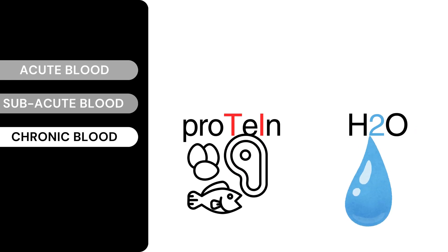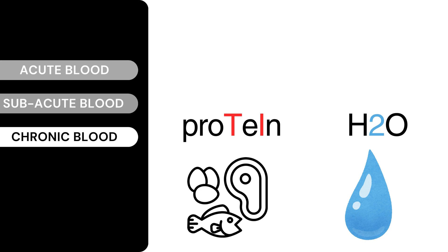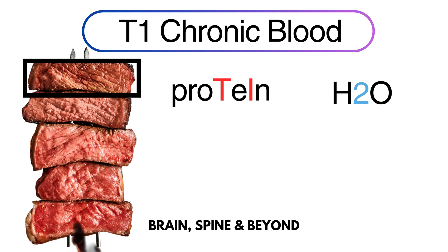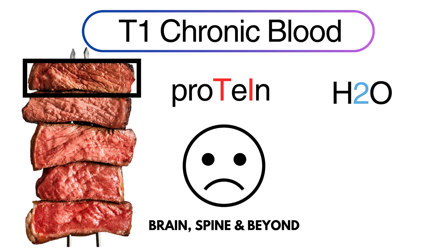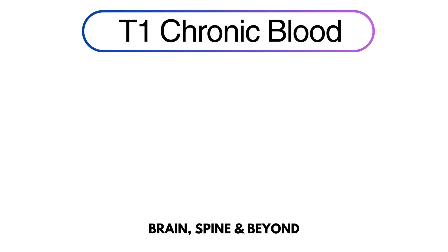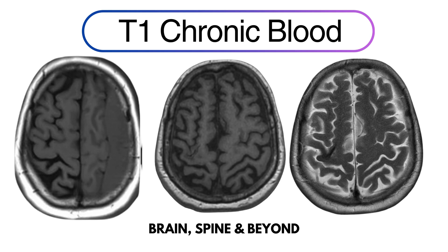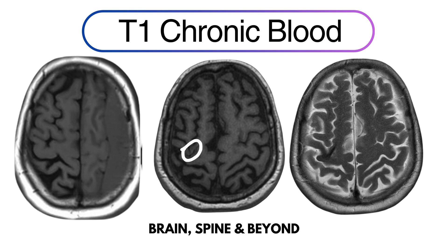In the chronic phase, protein gets destroyed — protein lysis happens — leading to release of iron from the heme part of hemoglobin, and water continues to disappear. Using the steak example: if we heat it more, it becomes more dried, starts to burn and has an outer black layer. It becomes dark on T1, and since even water dries up, it becomes dark on T2 as well — no one loves burnt steak, so it's dark in all sequences. Looking at a four-year-old scan after ITH, on T1 it's dark, and on T2 it's still dark.